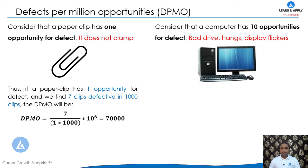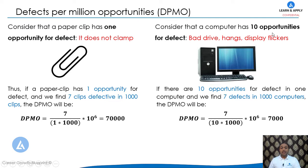Now let's take a more complex example. Instead of a paper clip, consider a computer that has 10 opportunities for defect — such as a bad drive, continuous hanging, display flickering, and many other possible issues. In this situation there are 10 opportunities for defect per computer, and we find seven defects in one thousand computers.